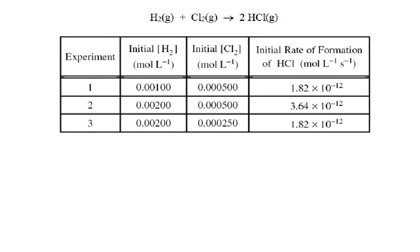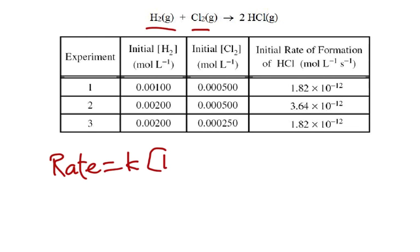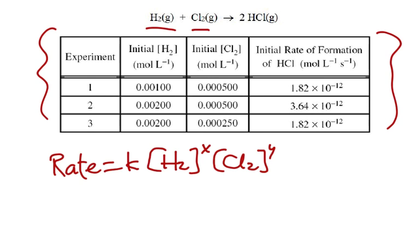In order to do this, we're going to use what we call the method of initial rates. So if we had hydrogen and chlorine, first we write the basic rate law: rate equals K times the concentration of hydrogen gas to some power times the concentration of chlorine gas to some power. We use a chart where somebody runs experiments, putting in initial concentrations of each chemical and measuring the rate — in this case, HCl in moles per liter per second.